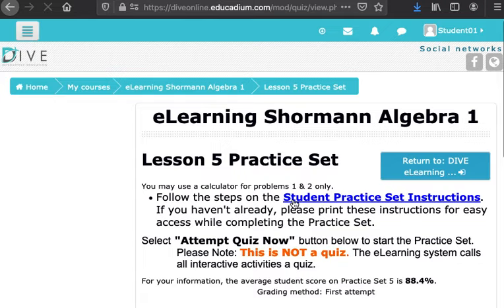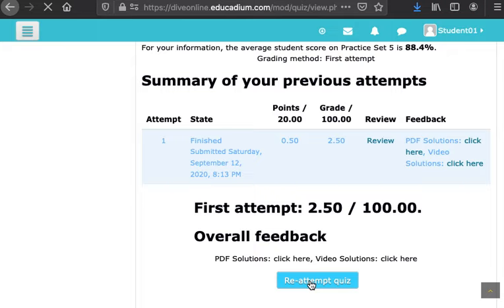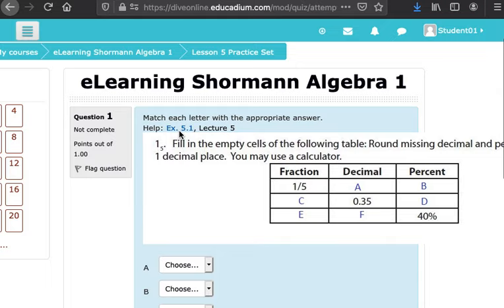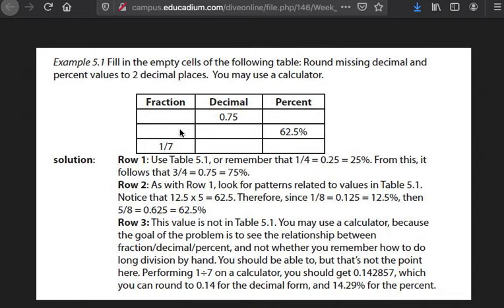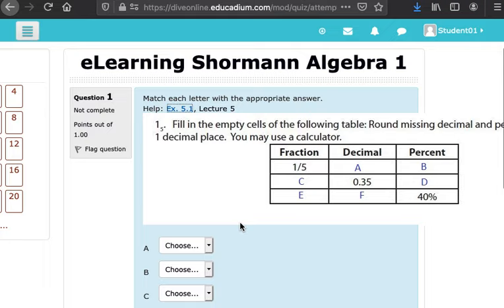Also within a practice set, you can take a practice set again, and notice it shows your previous attempt, shows your grade there. You can re-attempt it if you want to. It's a good way to study for the quarterly exam. At the top of every problem, there's help links. There's an example 5.1 link for this particular problem to kind of refresh your memory. That opens in a new window for you. It even has a link for the video lecture if you want to watch the lecture for that particular type of problem.